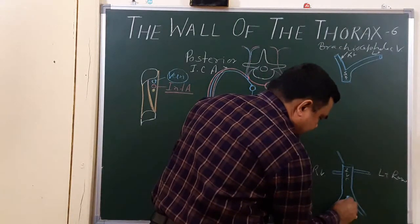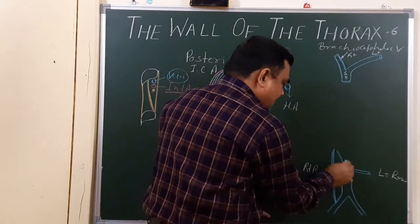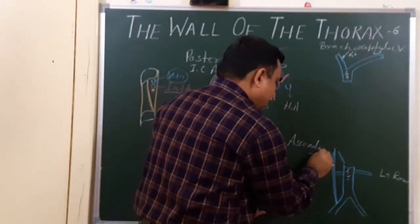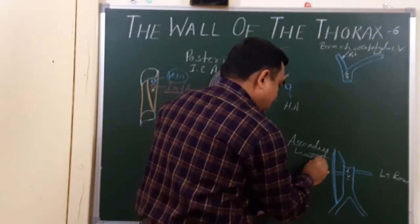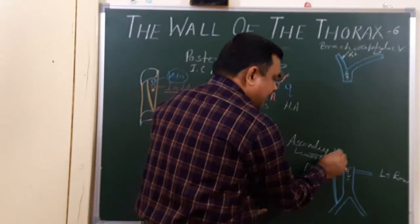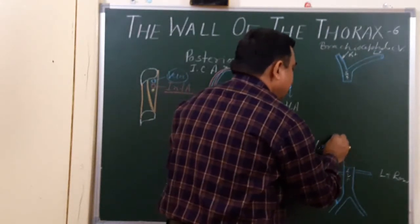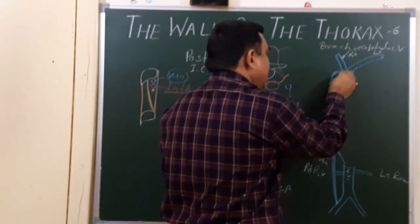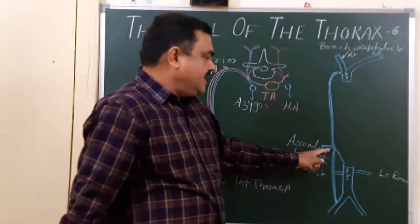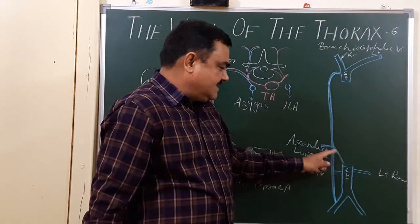This is the right and left common iliac vein and here is the ascending lumbar vein. This vein is the ascending lumbar vein, and this vein is the lumbar azygous. Here is another vein — that is the subcostal vein. All three veins join to form the azygous vein, which opens into the superior vena cava. The azygous vein is formed by three veins: the ascending lumbar, lumbar azygous, and subcostal vein.